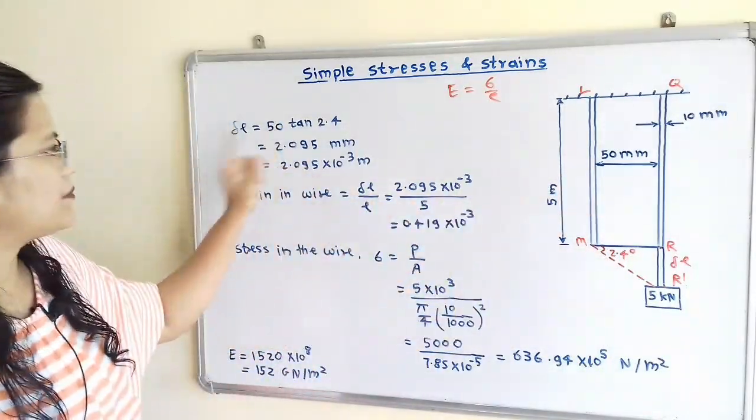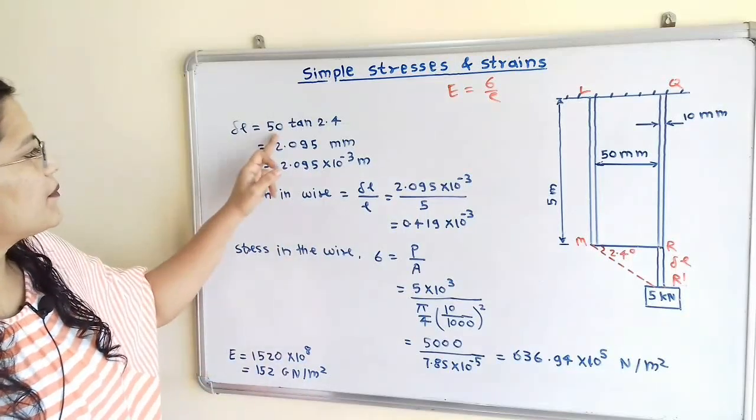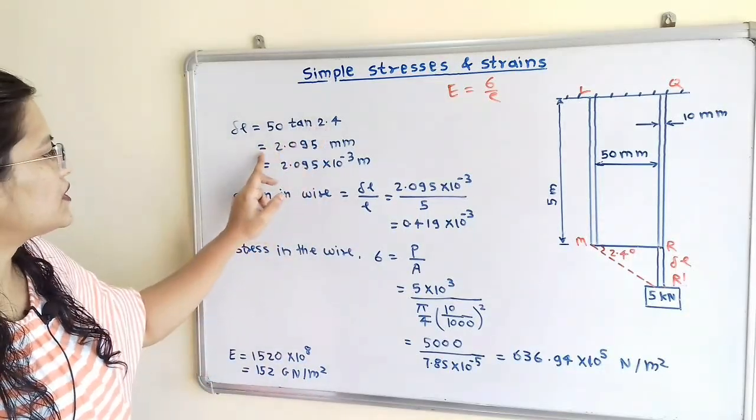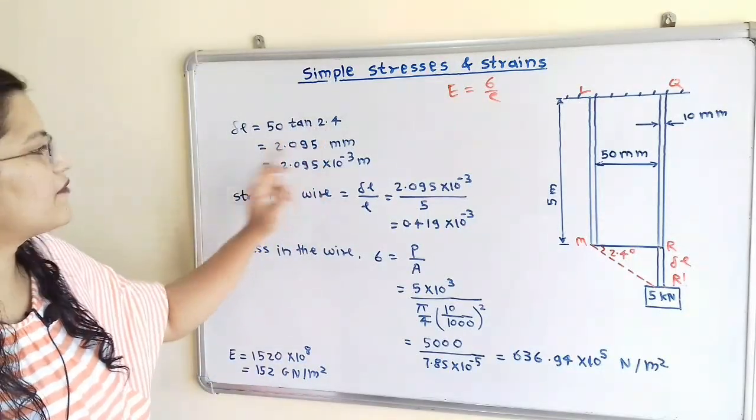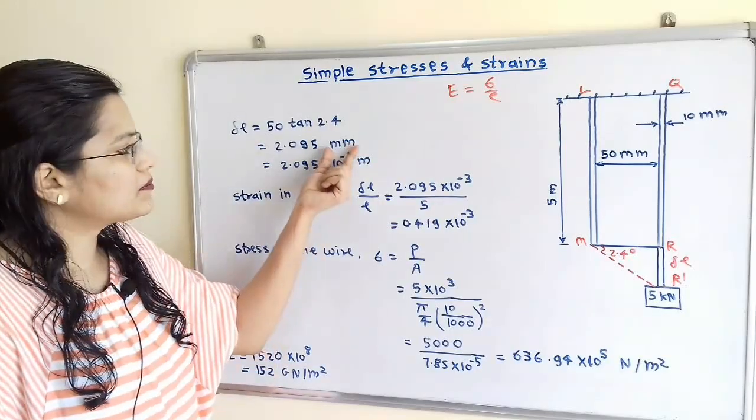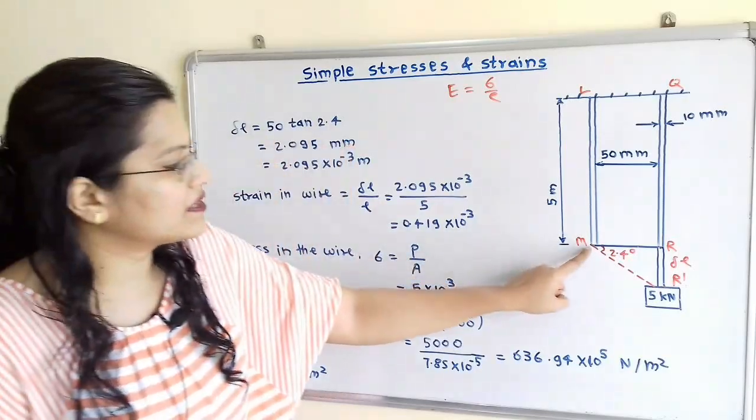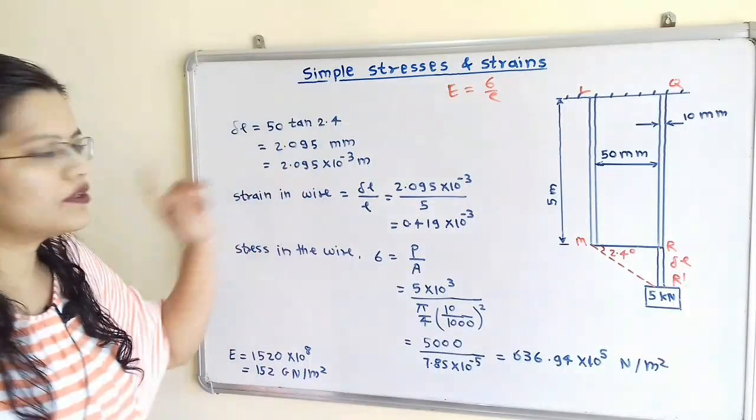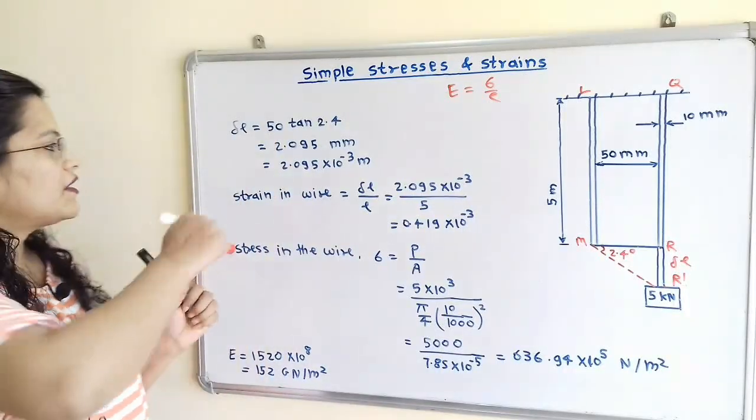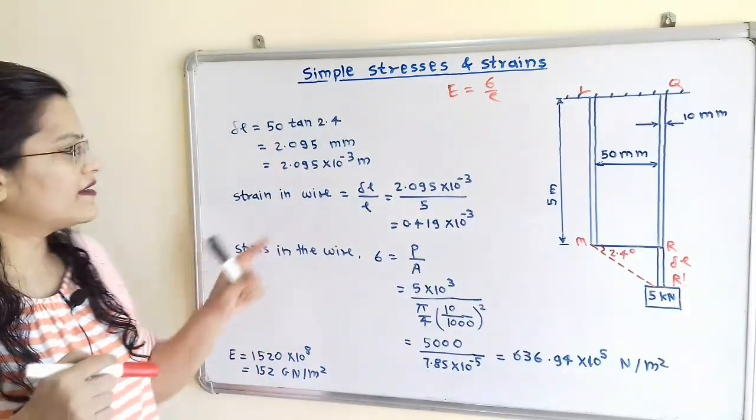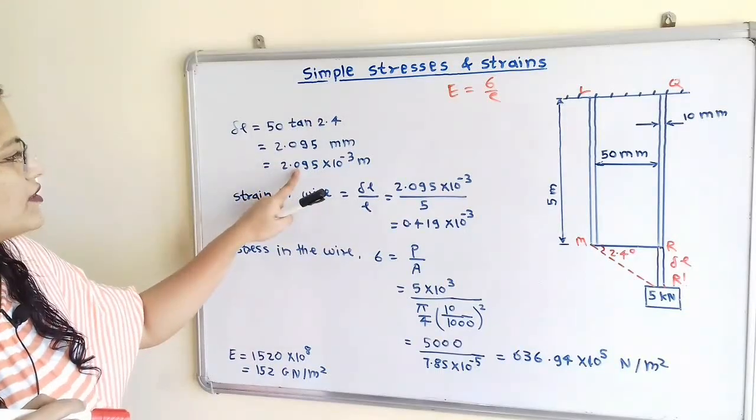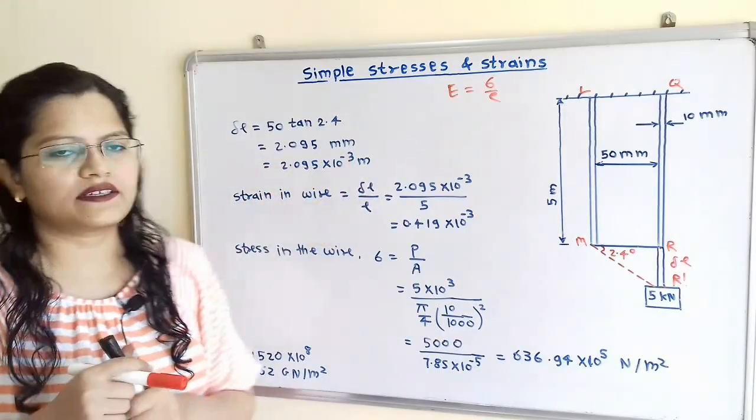So MR' is 50 mm. So we will take here 50 tan of 2.4 which is equal to 2.095. Now its unit is mm because we have taken the length of the bar in mm. Now we will convert it into standard unit that is meter, 2.095 into 10 raised to minus 3 meters.